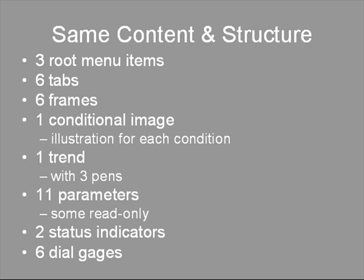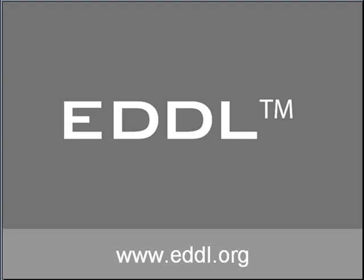Did you notice how the content and structure of the information in the device is the same in all three systems, as defined by the device manufacturer? Let's review. The root menu contains the same three items from the IEC 61804 Technical Report: Process Variables, Diagnostics, and Configuration Setup. There were six tabs, six frames, one conditional image with illustration for each condition, one trend with three pins, 11 parameters, and two status indicators. On the other tab, there were six dial gauges in all three systems — just as intended by the device manufacturer. No information hidden or lost. EDDL is the key to interoperability. Use EDDL to gain access to information in intelligent devices as intended by their manufacturer, yet enjoy unmatched consistency and ease of use independent of the device manufacturer. Visit www.eddl.org for more information.